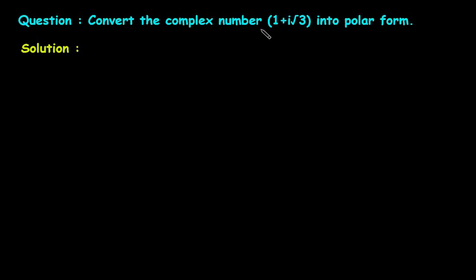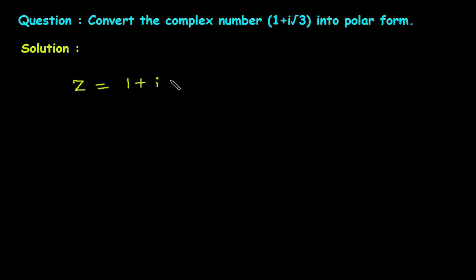Convert the complex number 1 plus i root 3 into polar form. Solution: suppose z is the complex number and it is equal to 1 plus i root 3.